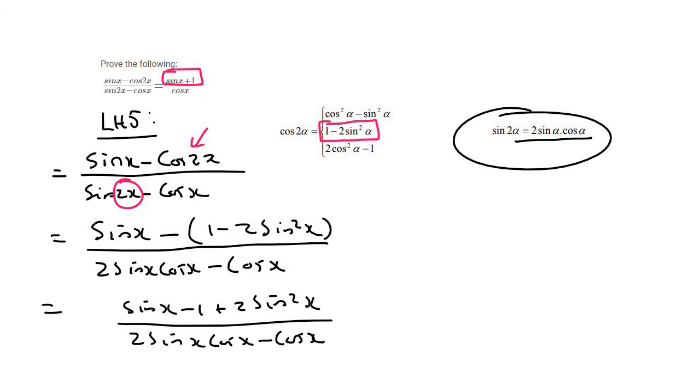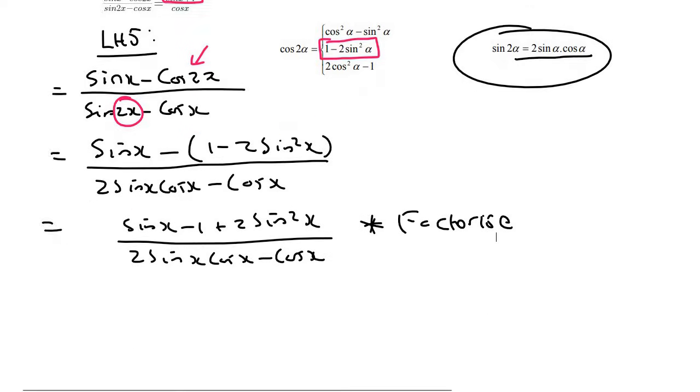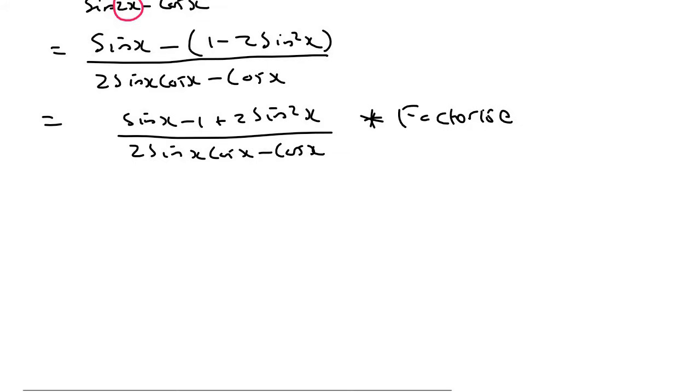Next step, just simplify. And then our next step is factorize. But now guys, that doesn't always mean common factor. Factorizing could mean trinomials, difference of squares, all sorts of stuff.